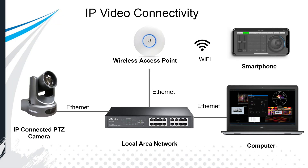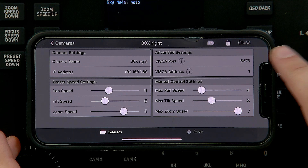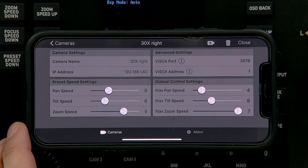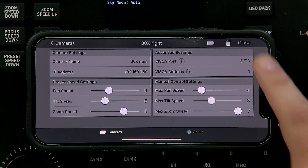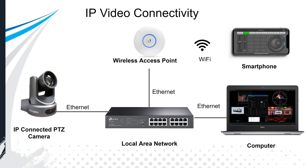Looking at a slightly more advanced network — we've got a network switch in the middle, connected to a router. Now we've got a PTZ camera, an access point, a computer, and a smartphone. In order for the smartphone and computer to connect to the PTZ camera, we need to know the camera's IP address. Once we have that IP address — say the camera is 192.168.60 — we put it into our smartphone or software and now we can control the camera. That's how IP video works at a high level.